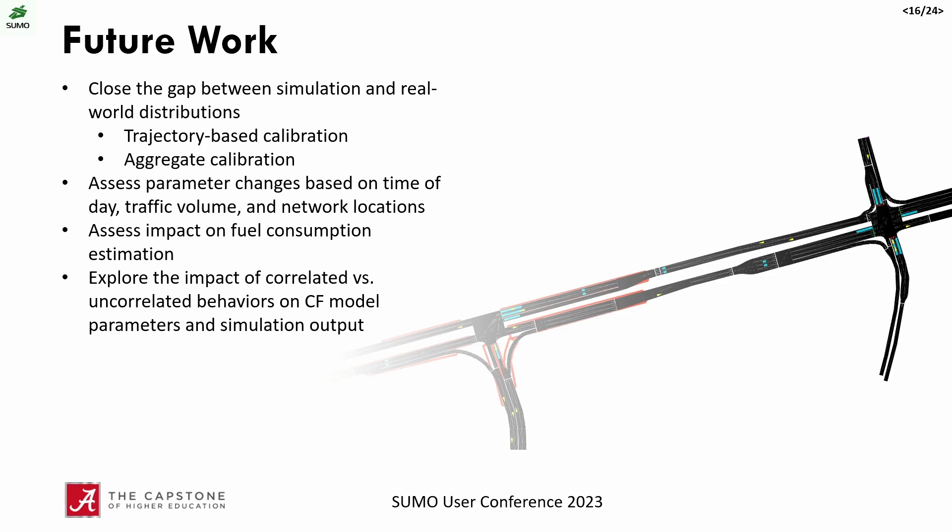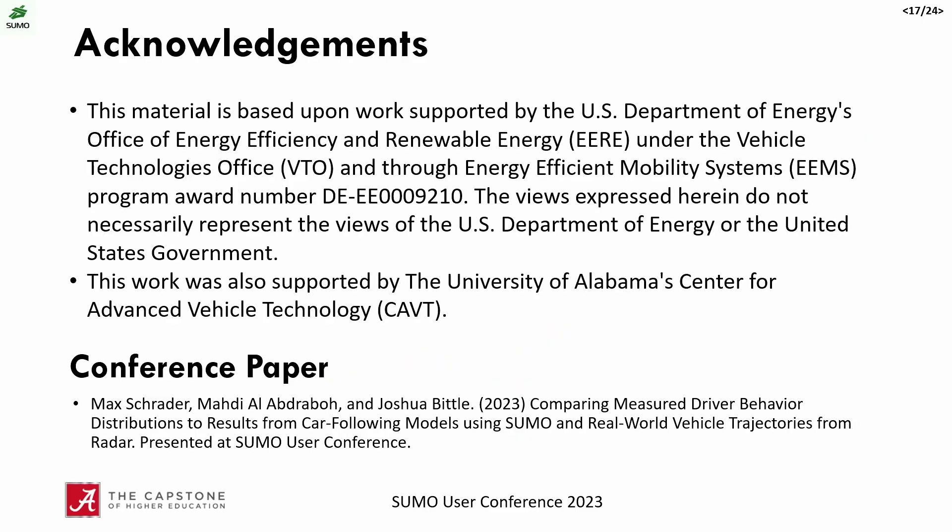In future work, one natural next step is to close the gap through calibration. We hope to investigate both trajectory-based calibration using radar trajectories and some form of aggregate calibration. We also have the ability to assess how parameters change at different network locations or times of day, estimate the impact of differences on fuel consumption, and look at how correlated versus uncorrelated sampling of parameters affects simulation. We did this work with support from the U.S. Department of Energy and the University of Alabama Center for Advanced Vehicle Technology, and this will be a conference paper in the proceedings.